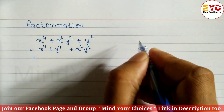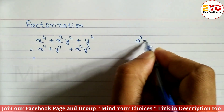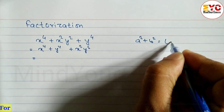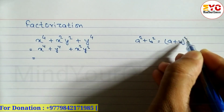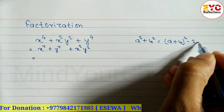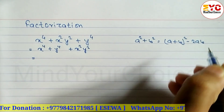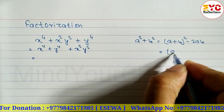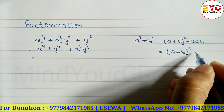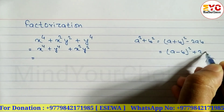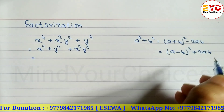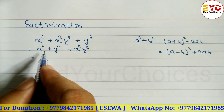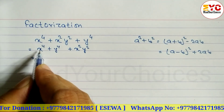Now try to convert these two terms into the form of a² + b². The formula for a² + b² is: a² + b² = (a + b)² - 2ab. Another formula is a² + b² = (a - b)² + 2ab. We have these two formulas for a² + b².